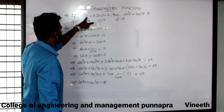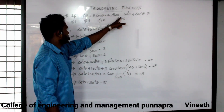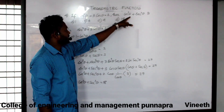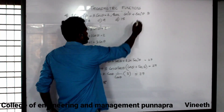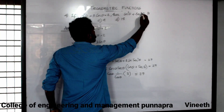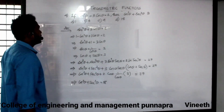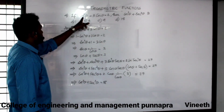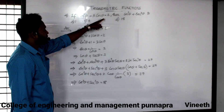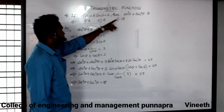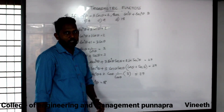Now another question: if sin square theta plus 3 cos theta is equal to 2, then cos cube theta plus cot cube theta is equal to what? That is the question.